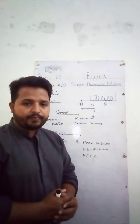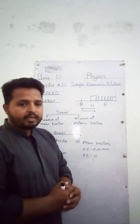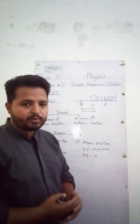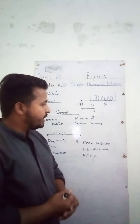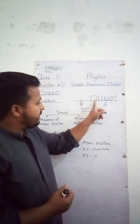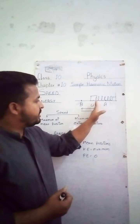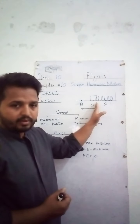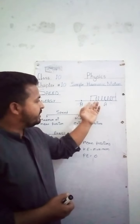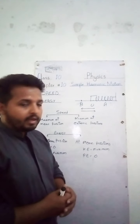Now we will discuss energy. Energy is the ability to do work. Types of energy include kinetic energy, which is due to motion, and potential energy, which is due to position. When the spring is in its original form at the mean position, the body is at rest in its natural state.